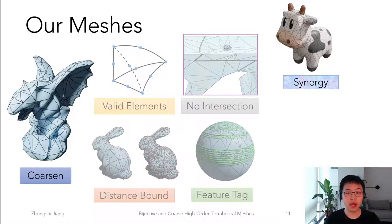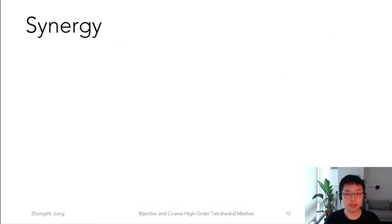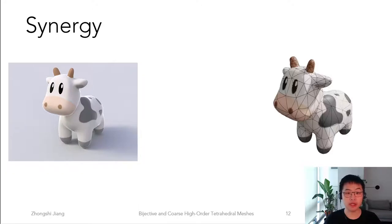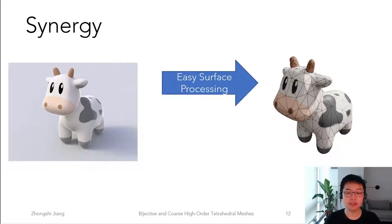And finally, we provide a continuous bijection from the input surface to the volumetric output surface. This enables the transfer of colors, materials, and boundary conditions in between. This bijective map can take advantage of easy surface geometry processing algorithms on the input, such as editing, coloring, and modeling, and then it can transfer them onto the curved mesh.